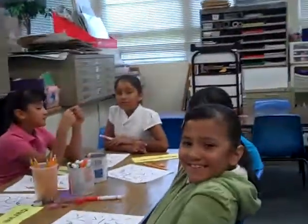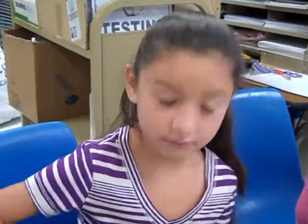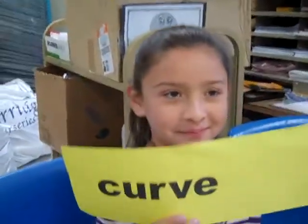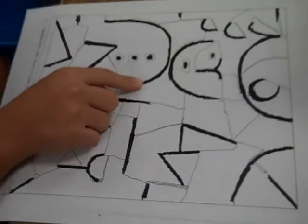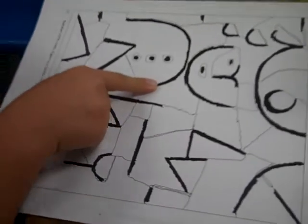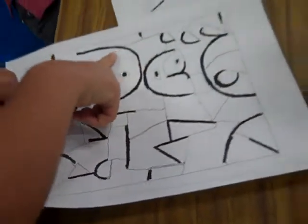Now we're going over to the next table. How are you today? Good. What word are you working on? Curve. Can I see your word? What's it start with? A C. And do you have an example on your paper of a curve? Go with your finger around the line so I can see how a curve goes. Very good.